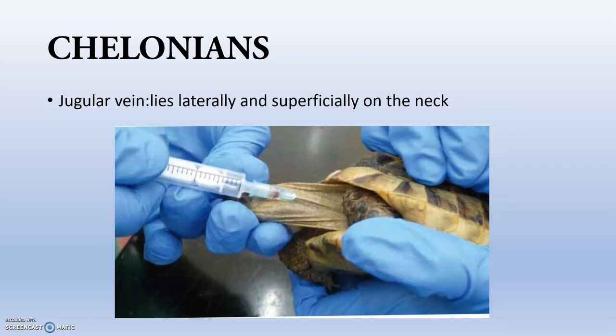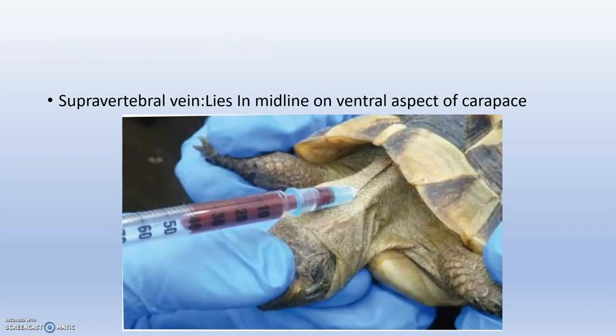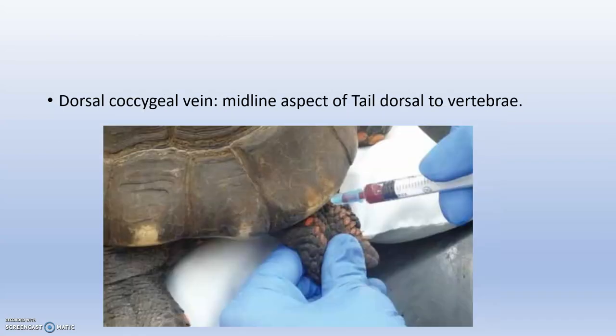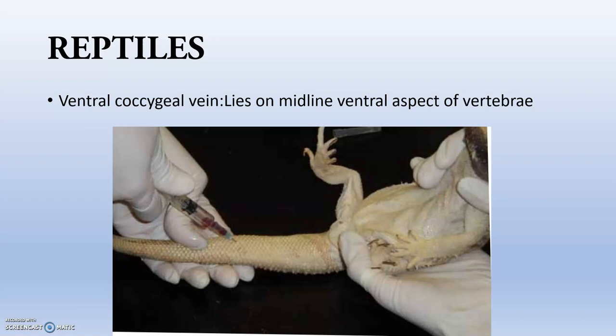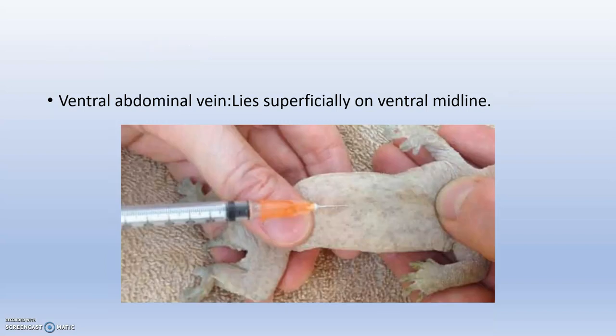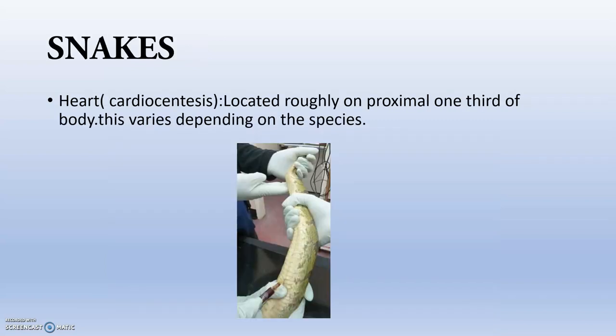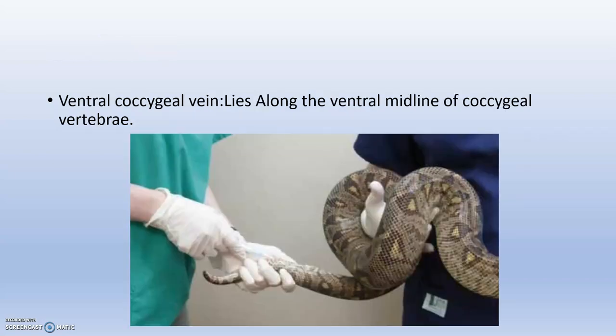For chelonians, we use the jugular vein, which lies laterally and superficially on the neck. The supraspinal vertebral vein lies in the midline on the ventral aspect of the carapace, and the dorsal coccygeal vein is also used. For reptiles, the ventral coccygeal vein lies on the midline ventral aspect of the vertebrae, and the ventral abdominal vein is also used. For snakes, cardiocentesis — direct blood collection from the heart — is sometimes used, as is the ventral coccygeal vein, which lies along the ventral midline of the coccygeal vertebrae.